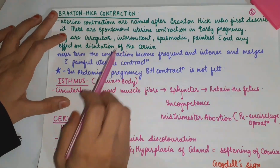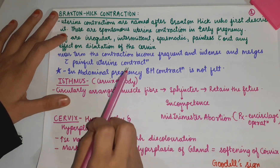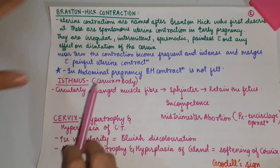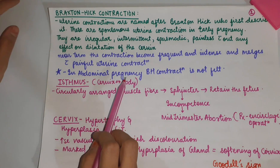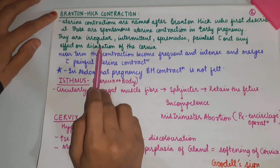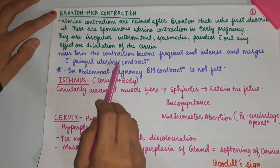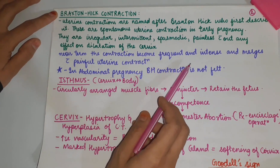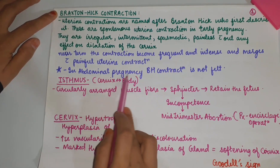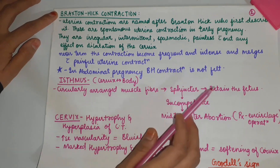Braxton Hicks contractions: uterine contractions named after Braxton Hicks, who first described them. These are spontaneous uterine contractions in early pregnancy. They are irregular, infrequent, spasmodic, painless, without any effect on dilation of the cervix. Near term, the contractions become frequent and intense and merge with painful uterine contractions. In abdominal pregnancy, Braxton Hicks contractions are not felt.